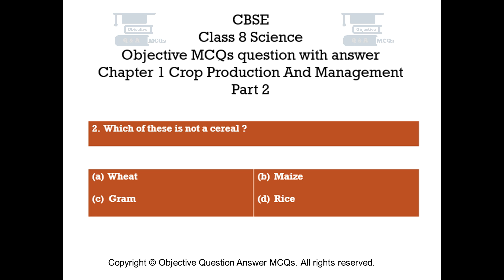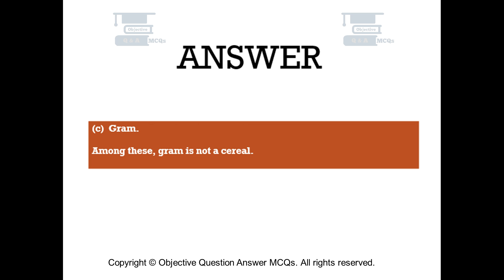Question number 2. Which of these is not a cereal? Option A: Wheat. Option B: Maize. Option C: Graham. Option D: Rice. The right answer is Option C, Graham. Among these, graham is not a cereal.